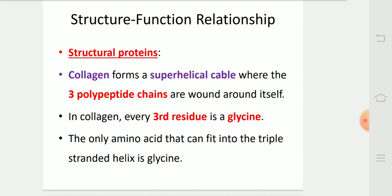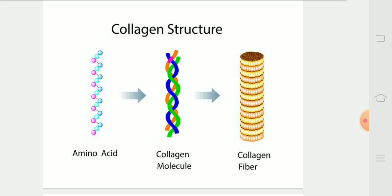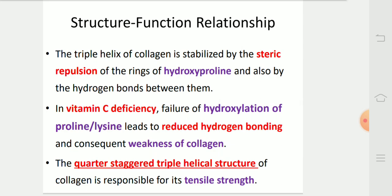Collagen is most abundant in animals and is the main fibrous component of skin, bones, tendons, cartilage and teeth. Collagen forms a superhelical cable where the three polypeptide chains are wound around itself. In collagen, every third residue is a glycine. The only amino acid that can fit in the triple-stranded helix is glycine. In this diagram, we can see the triple-stranded helix of collagen.